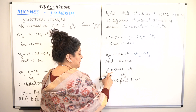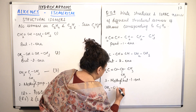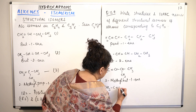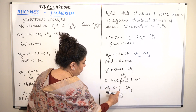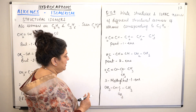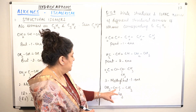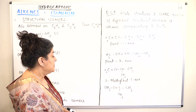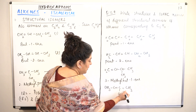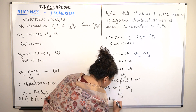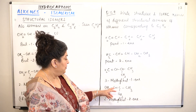We can also shift the double bond between carbons 2 and 3 in the branched structure: CH3-C(CH3)=CH-CH3, which has no hydrogen on the doubly-bonded carbon bearing the methyl group. Counting to give the ene the lower locant and naming the methyl substituent, this becomes 2-methyl-but-2-ene.